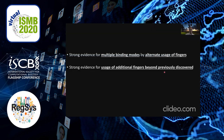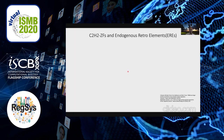To summarize these results: we found strong evidence for multiple binding modes using alternate sets of zinc fingers, and we also found strong evidence for the usage of additional zinc fingers beyond those previously discovered. Now moving on to the next part of the talk, where we're going to talk about C2H2 zinc fingers and how they relate to endogenous retroelements.